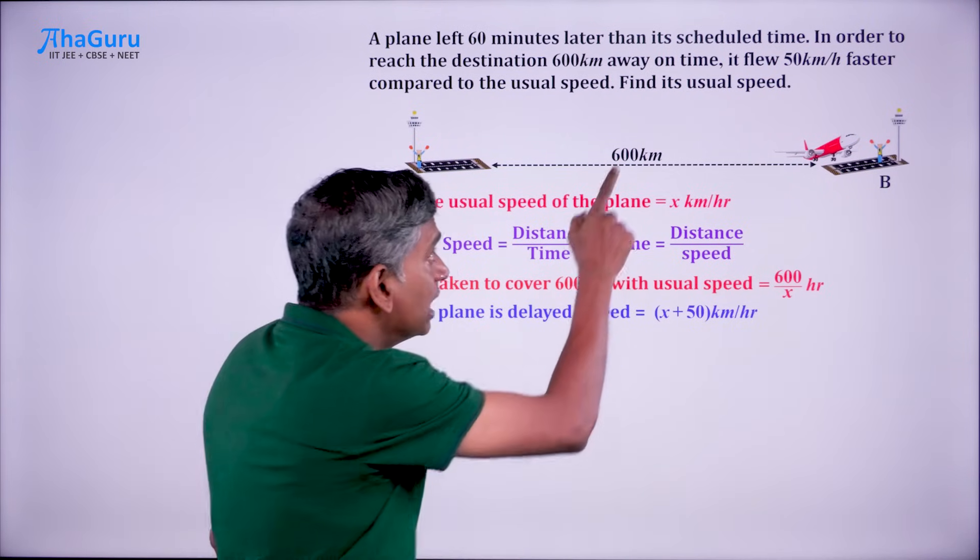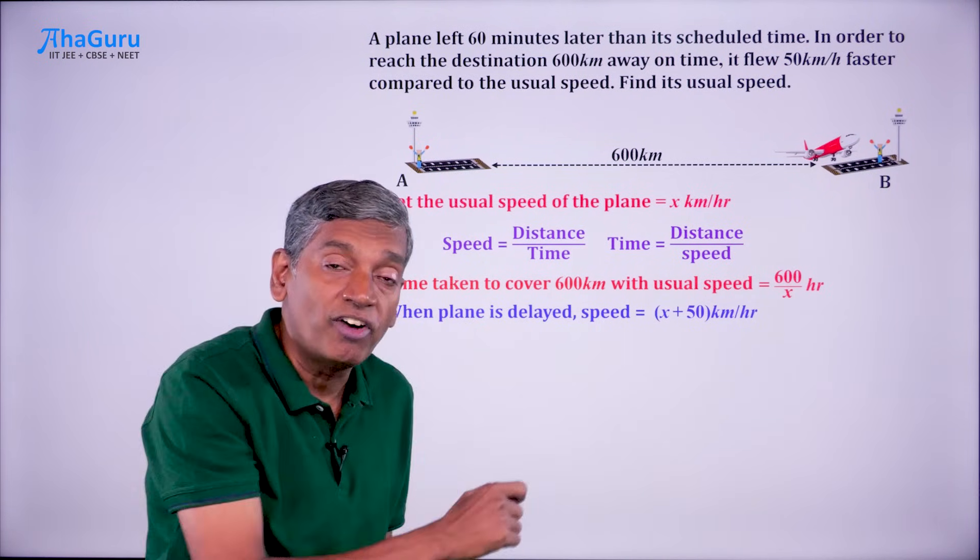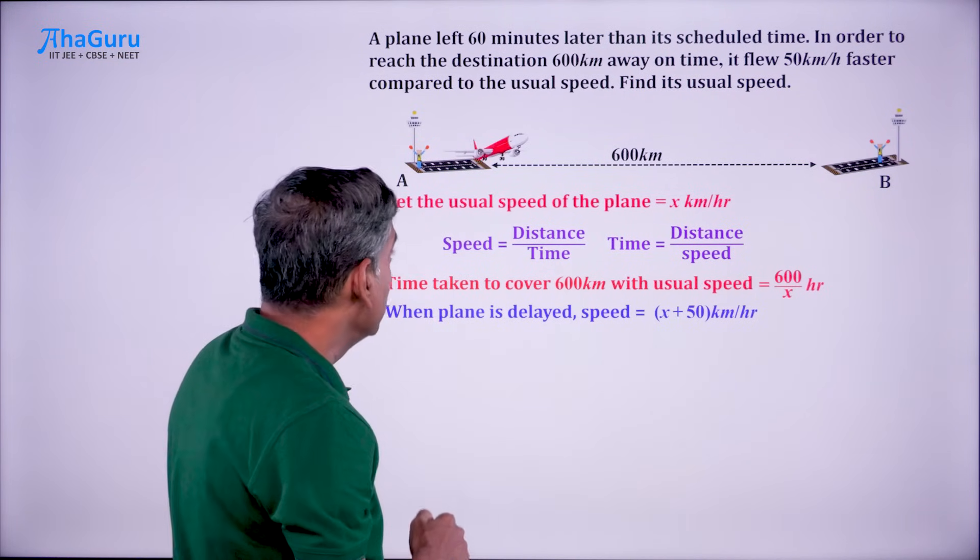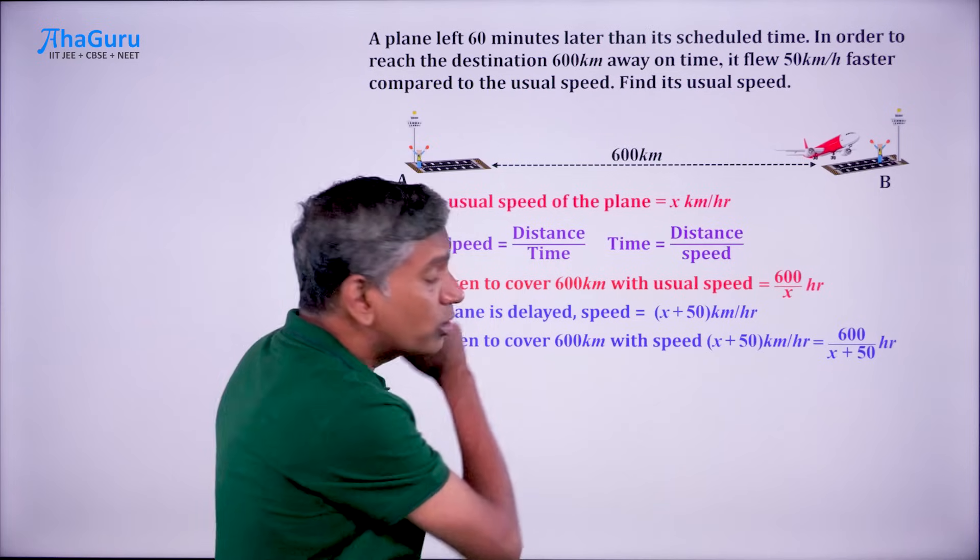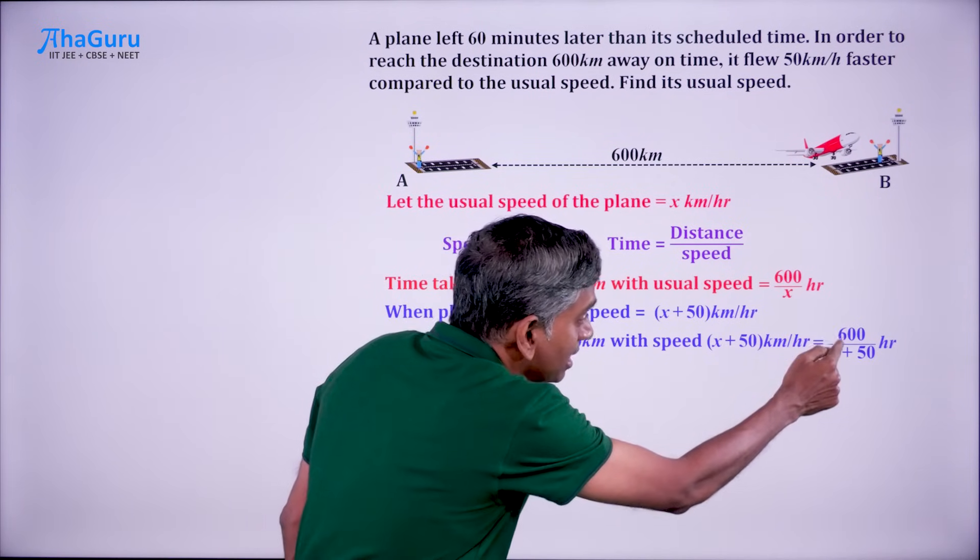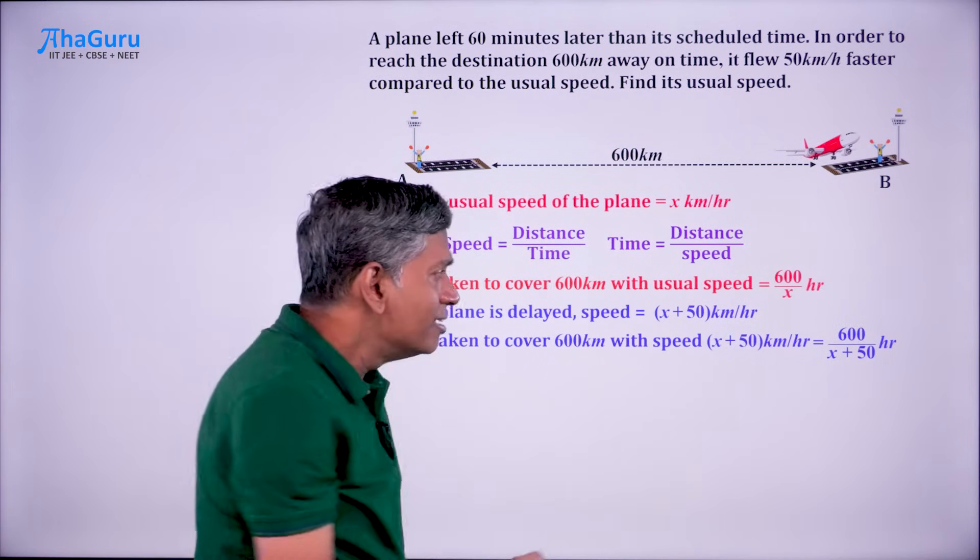Normal speed is x. Now, it is 50 kilometers per hour faster. At this speed, the time taken to cover the same thing is 600 by x plus 50.